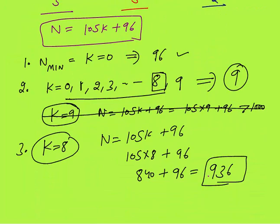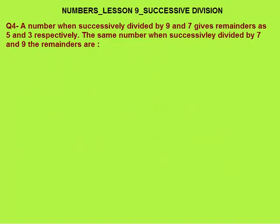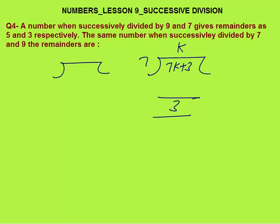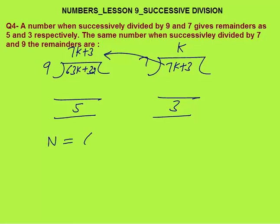Fourth question: a number when successively divided by 9 and 7 gives remainders 5 and 3. The same number when successively divided by 7 and 9 — what are the remainders? I will use the reverse method. The second divisor is 7, remainder is 3, quotient is K: so 7K + 3. This becomes the quotient for the first division. First divisor is 9, remainder is 5: number = 9(7K + 3) + 5 = 63K + 27 + 5 = 63K + 32.